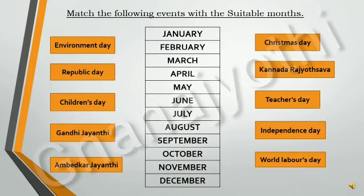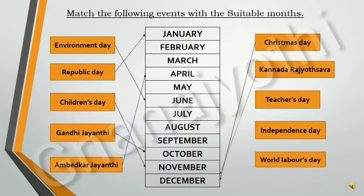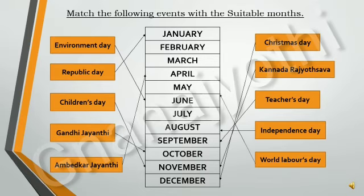Environment Day comes in June. Republic Day comes in January. Children's Day comes in November. Gandhi Jayanti comes in October. Ambedkar Jayanti comes in April. Christmas Day comes in December. Kannada Rajyotsava comes in November. Teacher's Day comes in September. Independence Day comes in August. And World Labor Day comes in May.